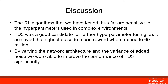From our results, the reinforcement learning algorithms tested are sensitive to the hyperparameters used in complex environments. Each algorithm reacts differently to different hyperparameters, and any small change in a hyperparameter could reflect a large change in performance. TD3 was a good candidate for further hyperparameter tuning, having achieved the highest episode mean reward when trained to 60 million time steps. By varying the network architecture and noise variance, we were able to significantly improve TD3 performance — a wider network outperformed a deeper one, and increased noise variance also improved performance.